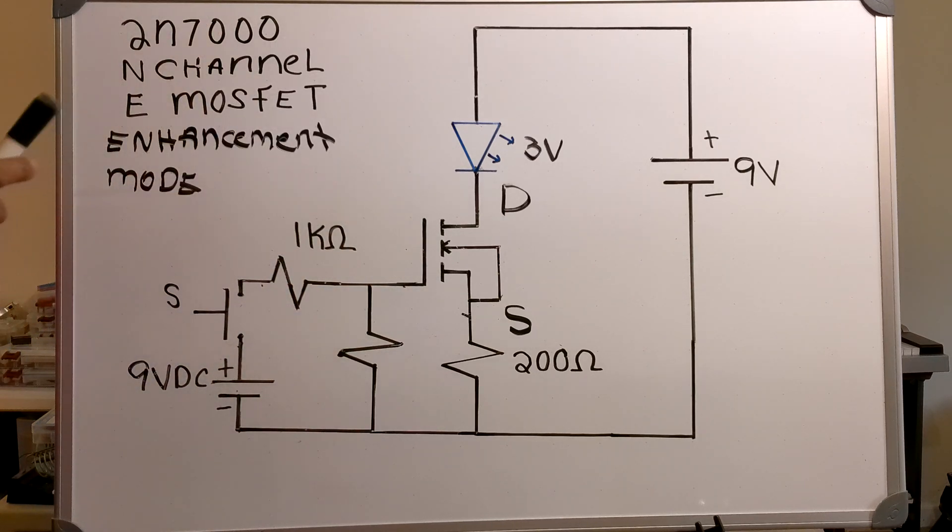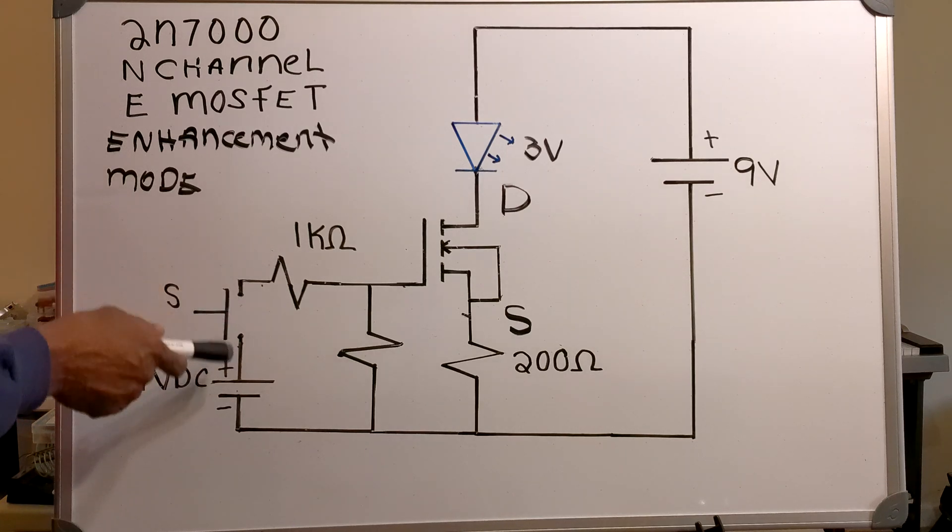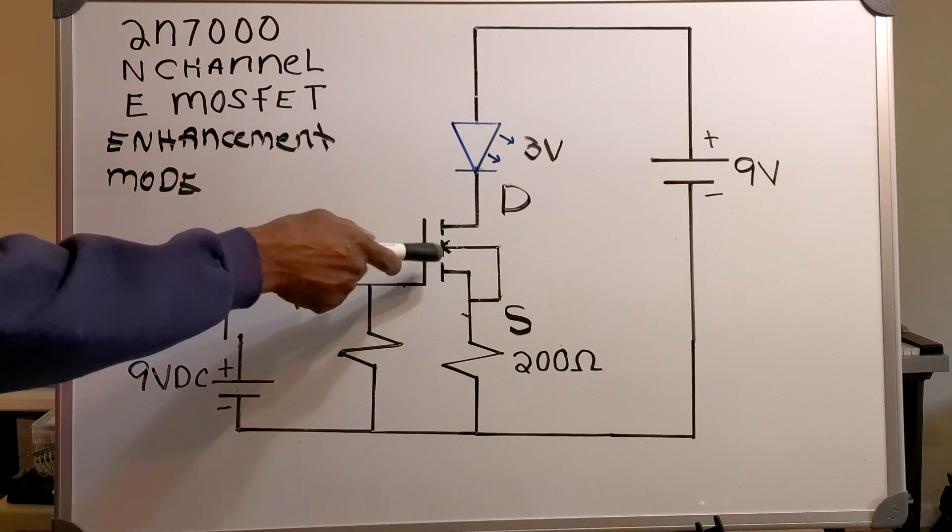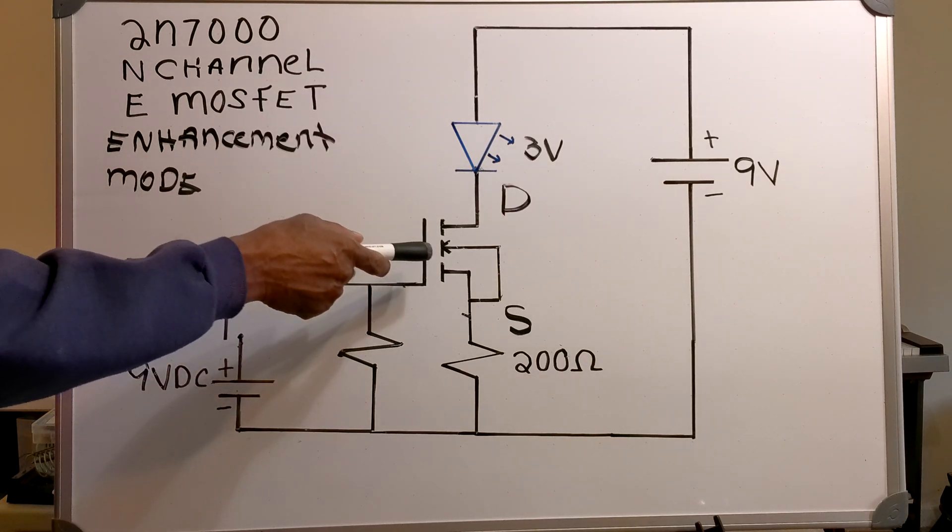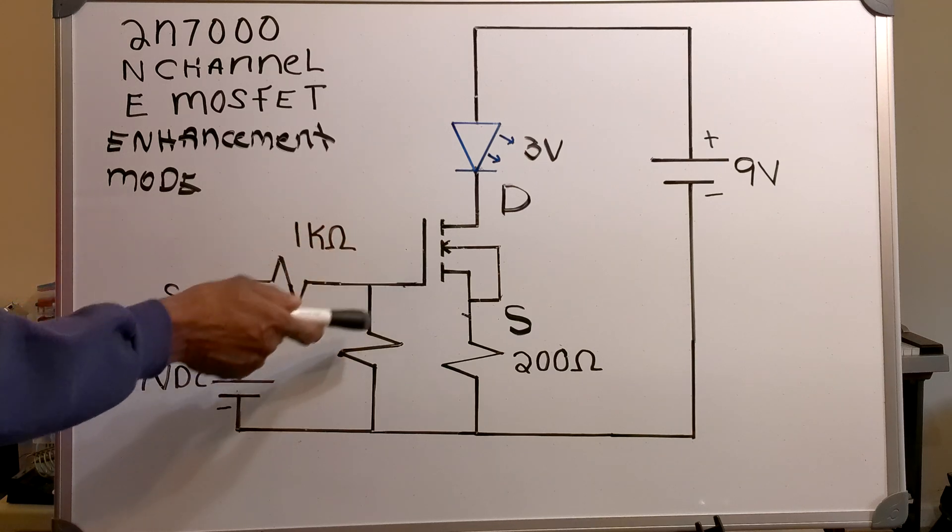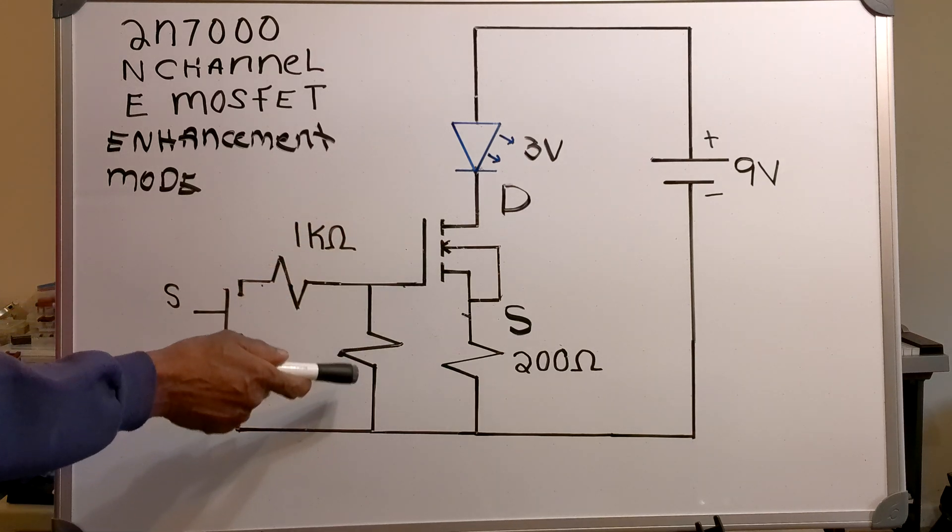And the thing about MOSFETs is this: sometimes, even when you do not have an applied voltage at the gate, you still may have a charge on the gate. And this resistor makes absolutely sure that the charge is completely drained off.